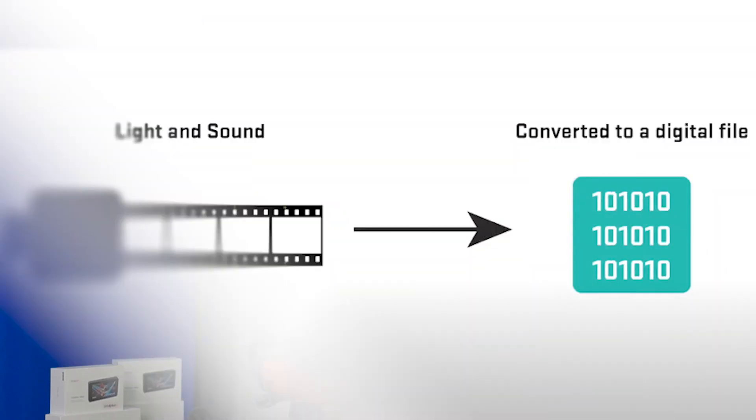A codec is a software tool used to compress and decompress digital video files. Without a codec, video files would be much larger and take much longer to transmit or store. Video codecs use complex algorithms to compress video files while retaining their visual quality. After clarifying the definition of codecs, let's take a closer look at H.264 and H.265.